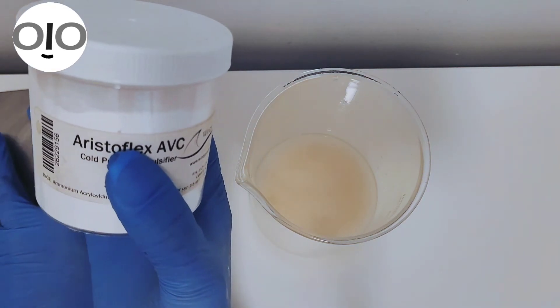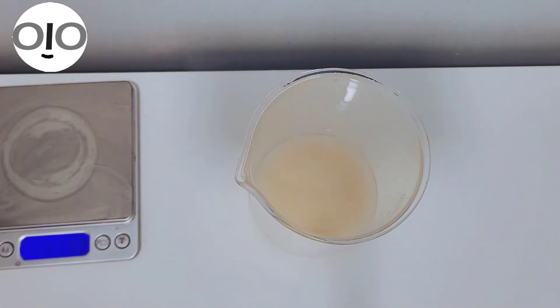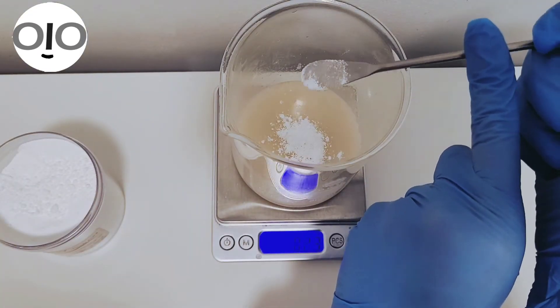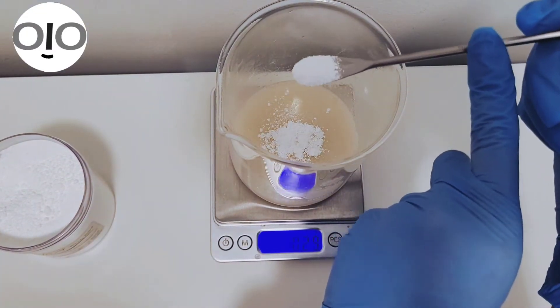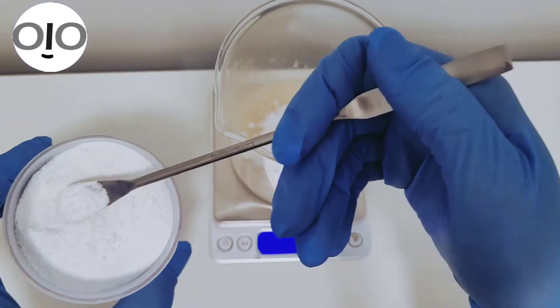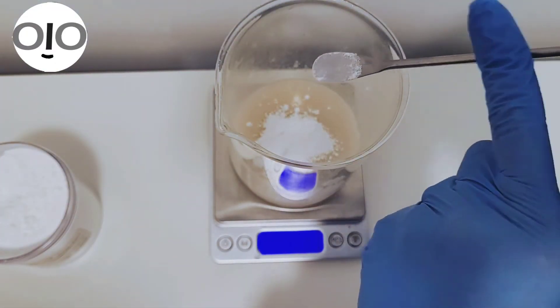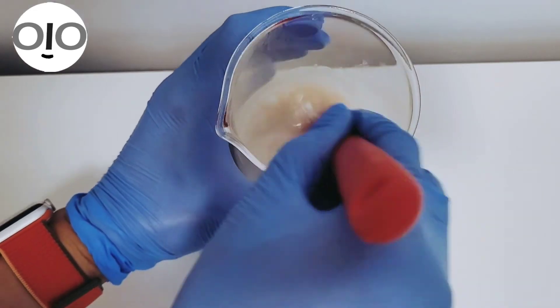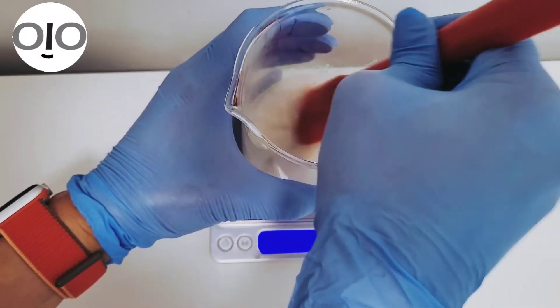Now I'm using my emulsifier and also thickener. I use Aristoflex ABC and this one comes in my formulation at 1%. This gives us a very lightweight and lotiony form of the formula, something like a serum type or a very light cream gel.